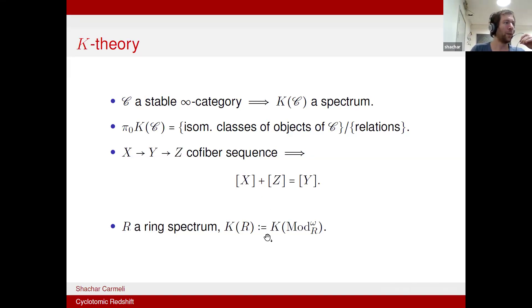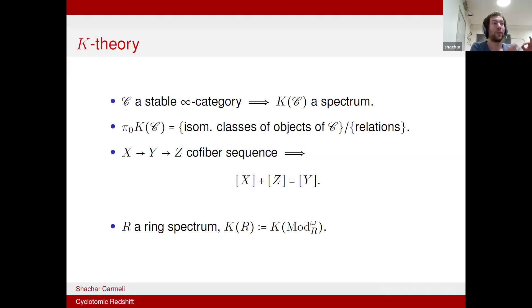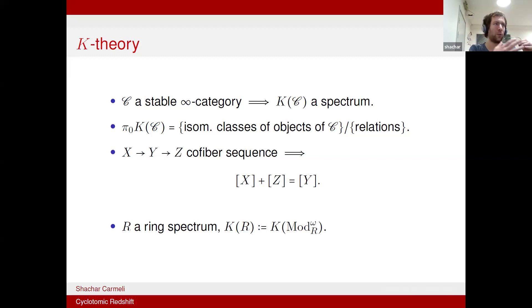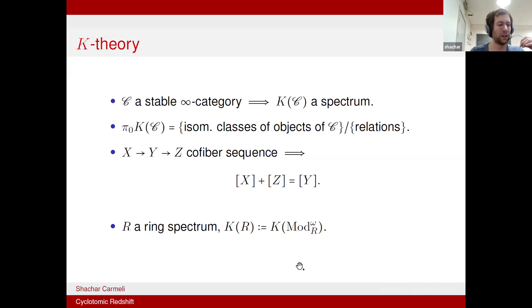So K-theory takes a stable category as input and produces a spectrum as output. It's good to think of both sides in terms of how we think about spectra. One thing one can say about spectra is that they can be filtered or divided into pieces given by the chromatic filtration. Let me say very roughly what that is, from a very historical perspective.